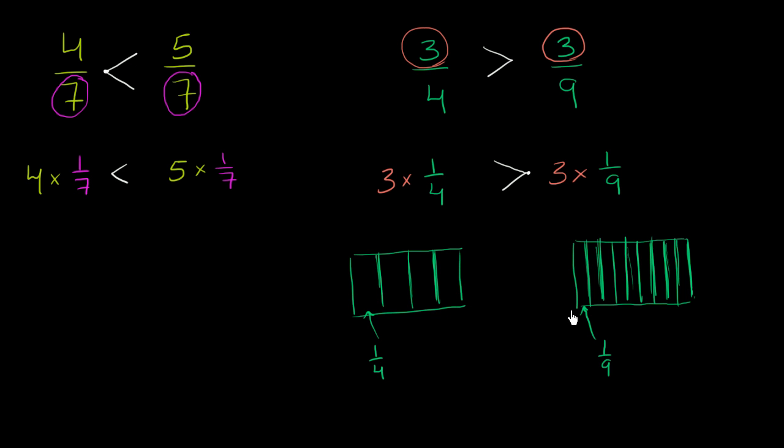And if you actually wanted to represent not just 1/4 and 1/9, we could actually color it in. 3 times 1/4, well that's 1, 2, 3, while 3 times 1/9 is 1, 2, 3. And when you look at it that way, it's pretty clear.